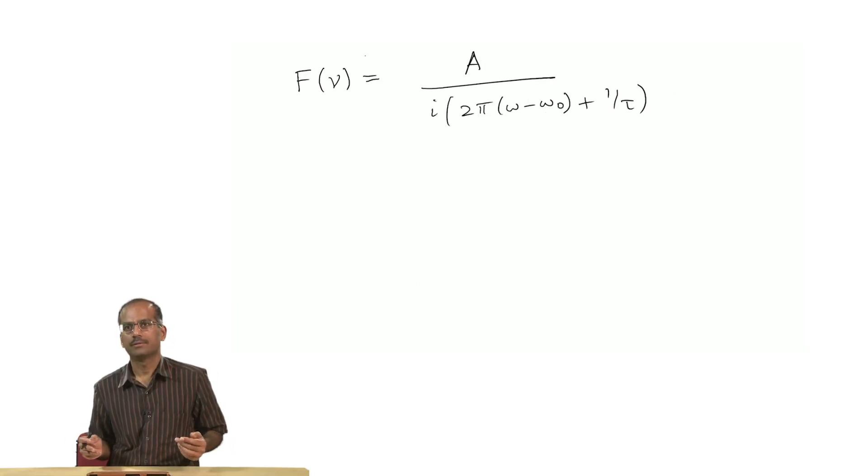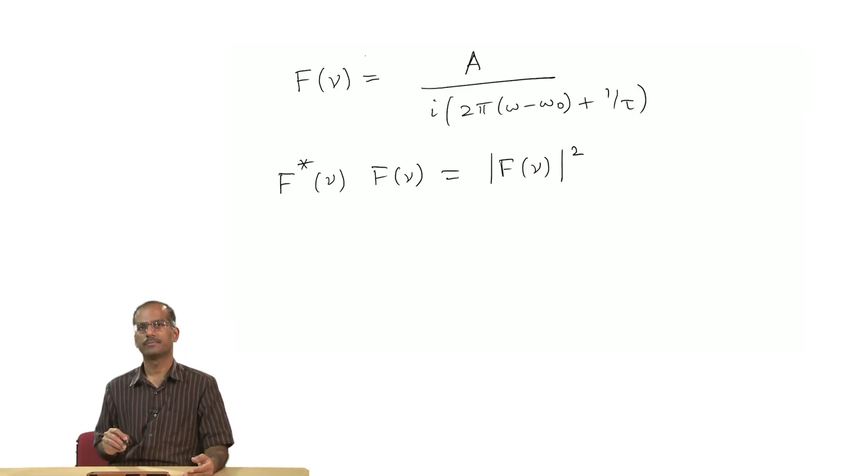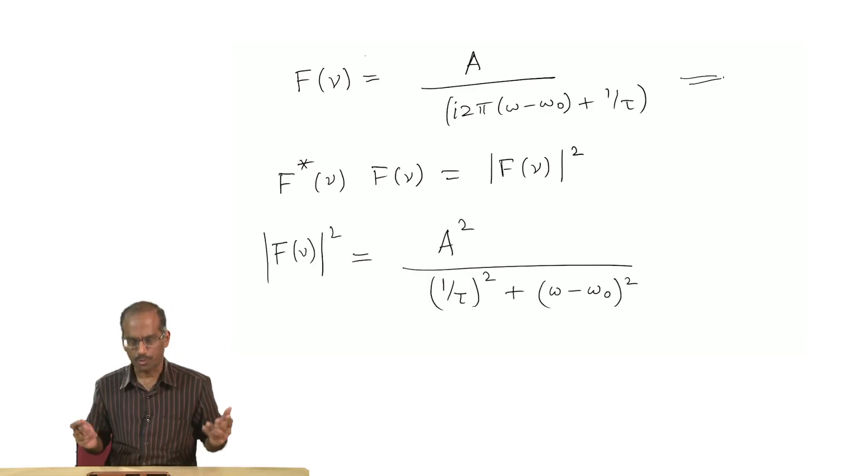This is my f of ν and I will also use the fact that 2πν is ω and 2πν₀ is ω₀. Now it is more convenient to look at it as what is called a power spectrum. We would like to calculate what is f*(ν) times f of ν. That would give me the modulus square of this and that would be a positive definite function. Let me directly write the result of this |f(ν)|² and that is going to give me, instead of using ν I have used ω, we know the relation between ν and ω.